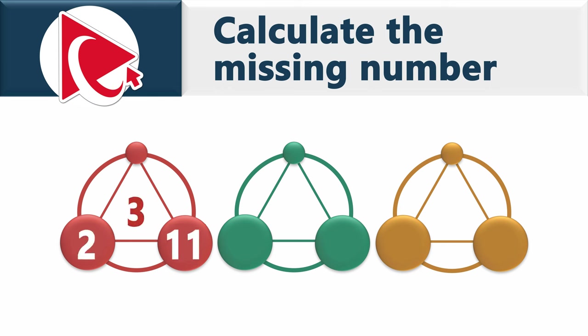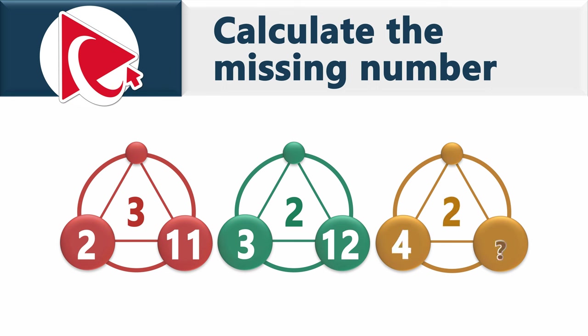The second shape has numbers 2, 3, and 12. The third shape has numbers 2 and 4, and you need to calculate the missing number in the third shape.